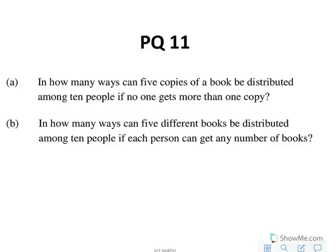In how many ways can five copies of a book be distributed among ten people if no one gets more than one copy? So basically, out of these ten people, each person at most can only get one.